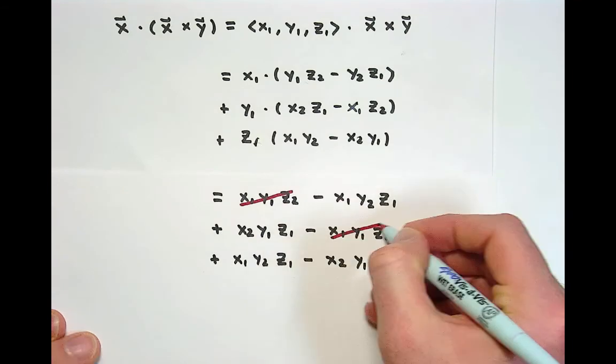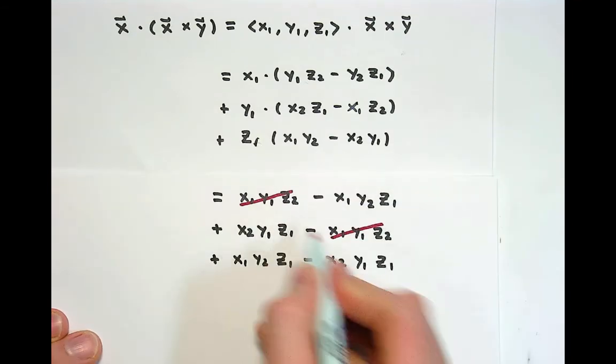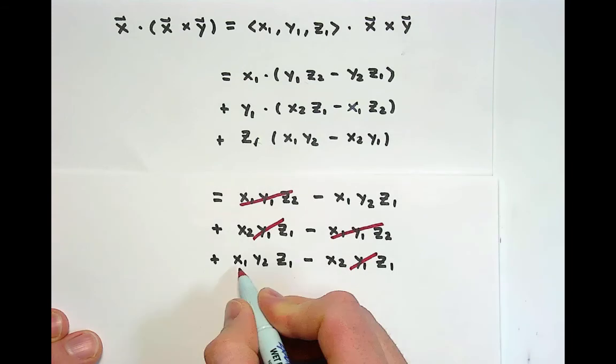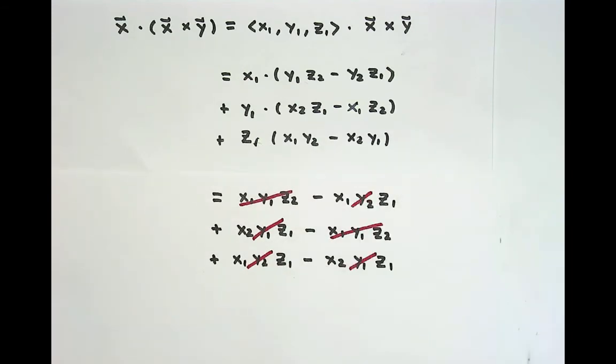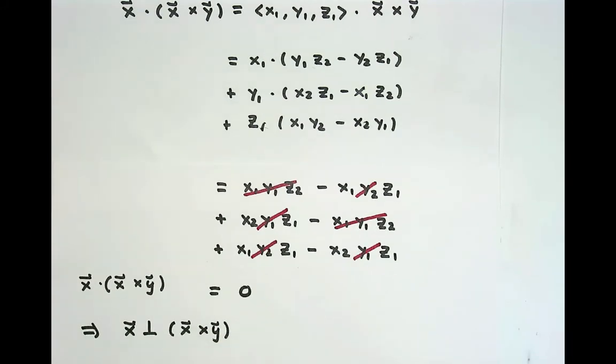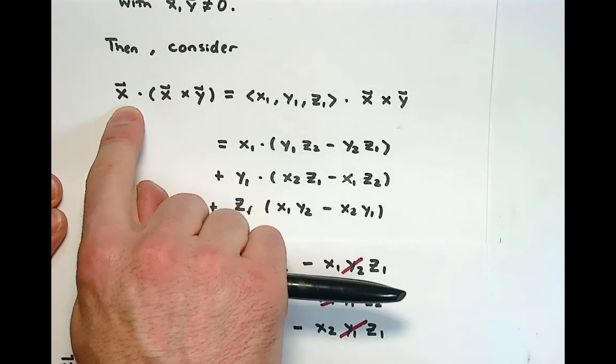These cancel out. We've got those canceling out to be zero. We've got the x₂y₁z₁ terms canceling out. And then we've got these terms canceling out. And indeed, what we just showed was that this dot product was zero. And then we know by the cosine formula for the dot product that this means the angle between x and x cross y is 90 degrees. And that must mean that they're orthogonal.